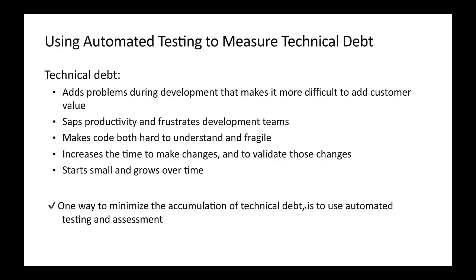To automate testing and measure technical debt, we can use SonarCloud. It helps you identify problems during development that make the code hard to understand. Technical debt also makes code fragile — if you try to remove certain code, the entire project might be in a hard state. It increases the time needed to make and validate changes, and although it looks small at first, it grows over time.